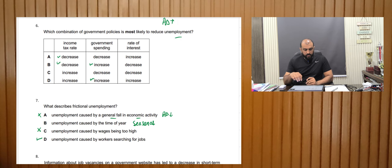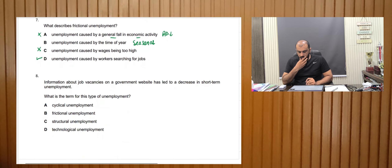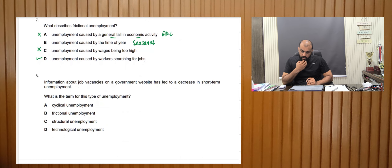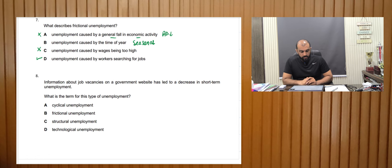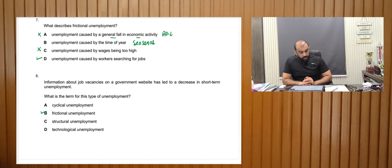Information about job vacancies on a government website has led to a decrease in short-term unemployment. People are finding jobs quickly and faster — that is the concept of search unemployment. What is the term for this type of unemployment? This is basically frictional unemployment — easy peasy.